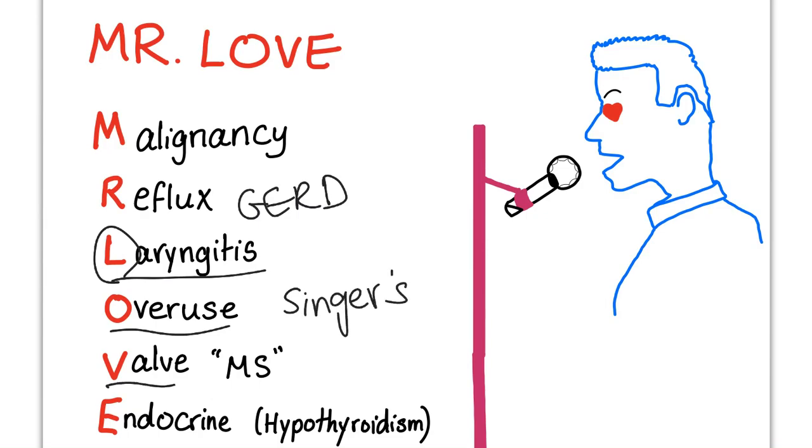V is valve, as in mitral stenosis. This is extremely high yield for the exam. Mitral stenosis will cause the mitral valve, which is the most posterior valve in the heart, to enlarge.